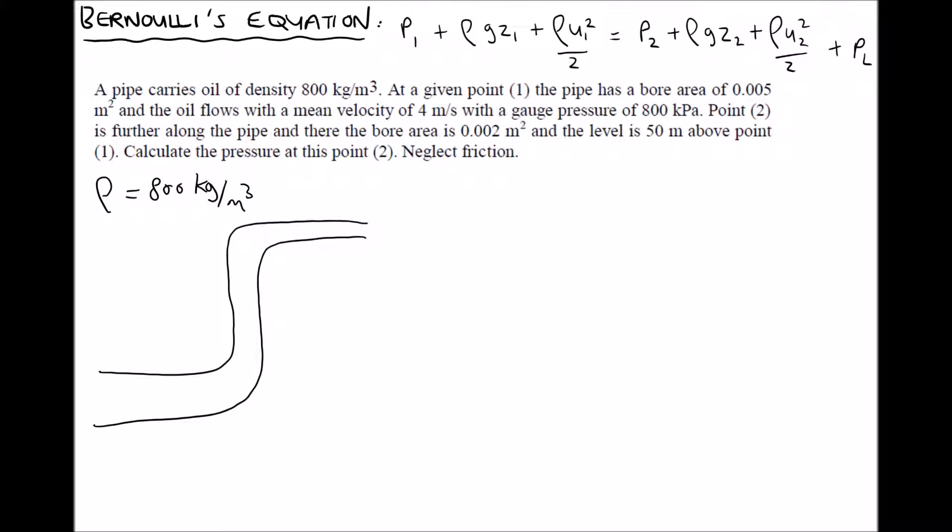Again, it's just a rough sketch. We know that point 2 is 50 meters above point 1. So if we add a dashed line to our center line, then we know that this distance here is 50 meters. We have a change in elevation.